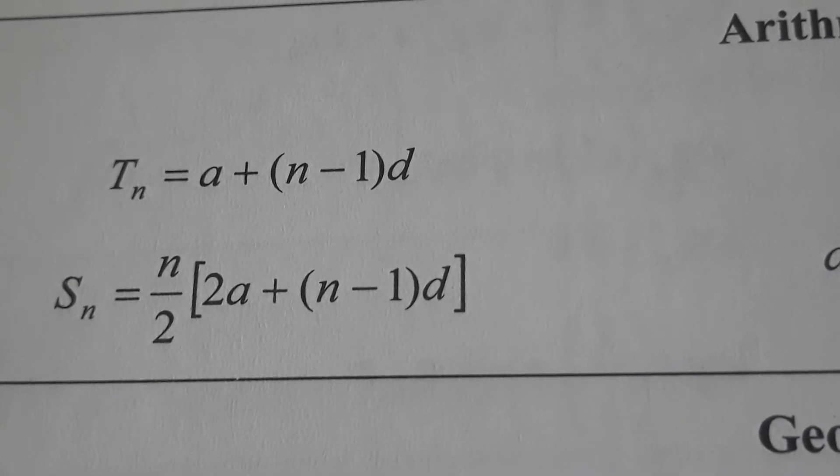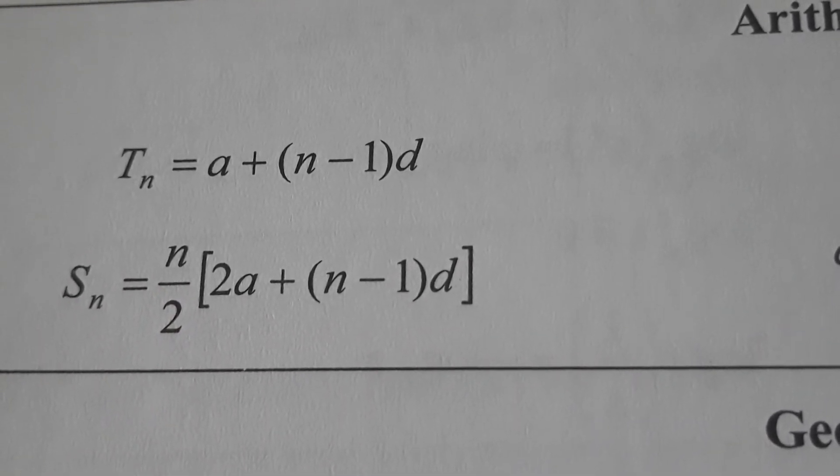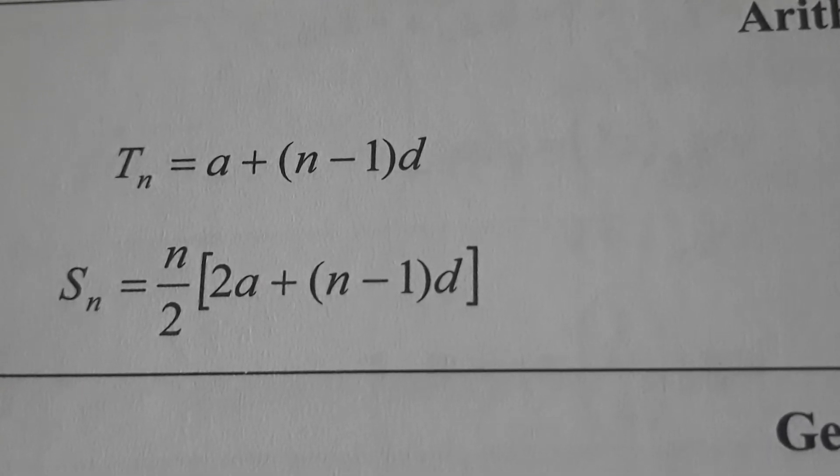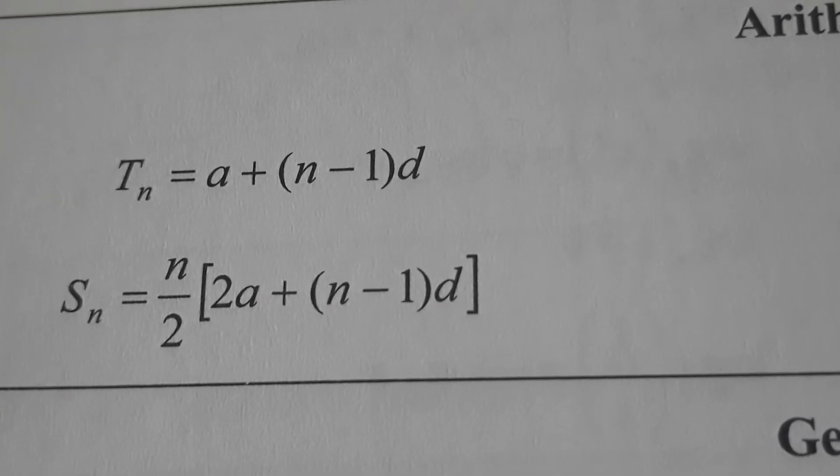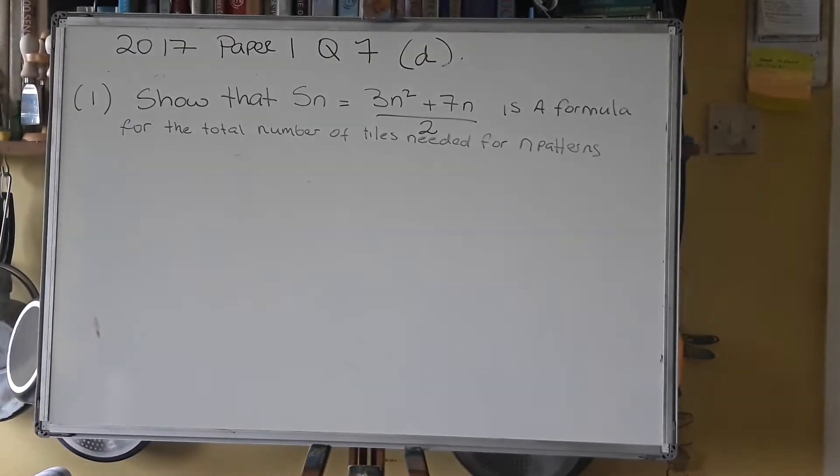Am I focusing on the right place? Yeah. Okay, so you want this one here. Sn equals n by 2 times 2a plus n minus 1d. And that Sn formula is always the same in the tables. And you find it on page 22 of your tables. Let me focus that now. There we go. Right, so we're going to write that up.